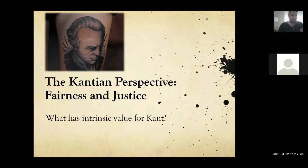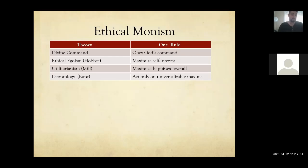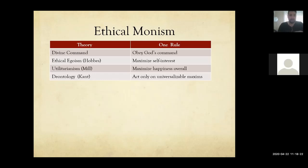You can't blame a demon, the devil, your parents, or anything else — it comes down to you. He's really strict about that. Comparing other theories: divine command theory had one rule — obey God's command; ethical egoism maximizes self-interest; social contract theory uses a contract with Hobbes; utilitarianism maximizes happiness overall. But deontology is going to say: act only on universalizable maxims. That's the rule. What does that mean?